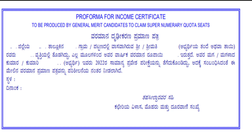The income certificate is issued by the Tahsildar — you apply and they get it done only in this manner. For OBC NCL (2A category) students, the certificate comes in Form F, where both income and caste are mentioned together, including parents' income. For other categories, income certificate and caste certificate are issued separately.